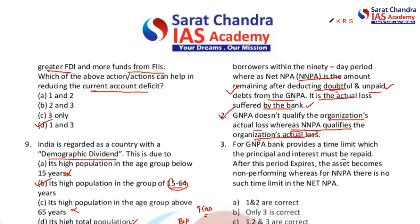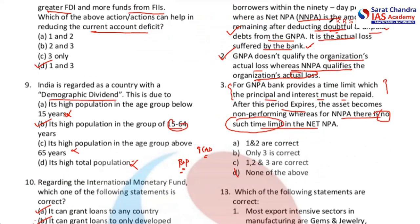For GNPA, the bank provides a time limit within which the principal and interest must be repaid. After this period expires, the asset becomes NPA. For NNPA, there is no such clear time limit — we don't know when we can recover that particular debt, as in the case of Vijay Mallya. So statements one, two, and three are all correct, pertaining to the 12th question.